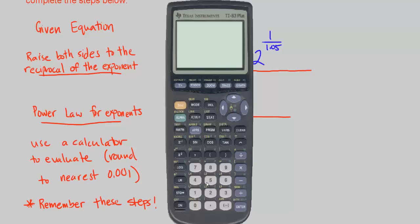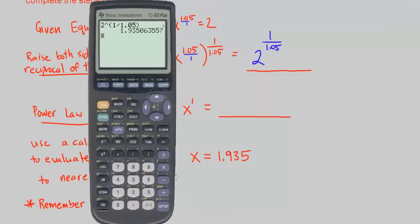So turn on your calculator, just raise 2 to the power of, and put it in parentheses because we're going to have a fraction in our exponent. So it's 1 divided by 1.05.